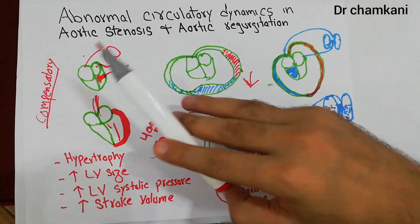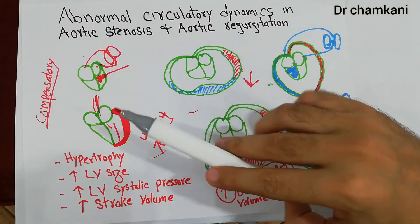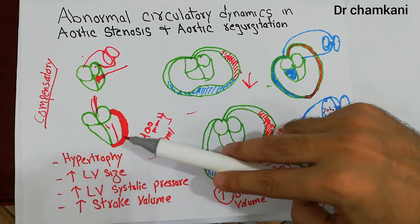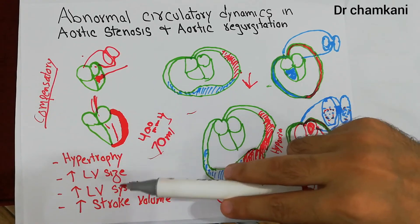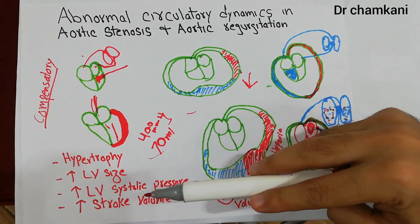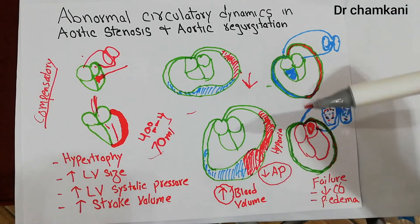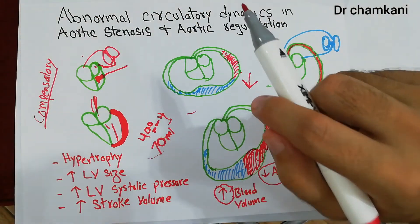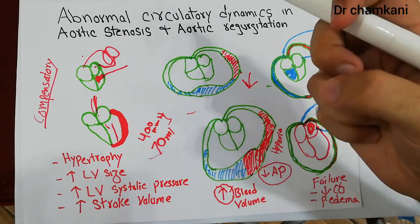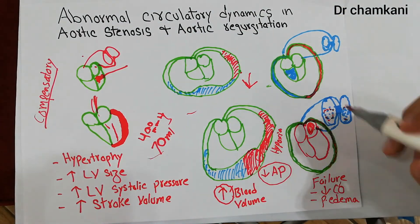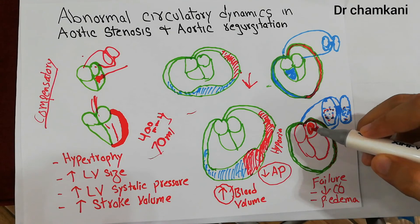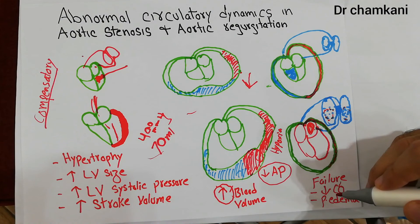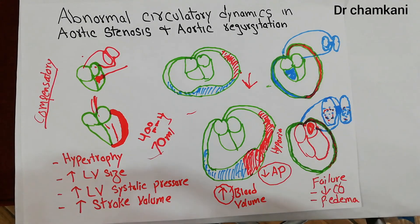In summary, the abnormal circulatory changes due to aortic stenosis and aortic regurgitation include: hypertrophy and increase in left ventricular muscle mass, increase in LV size, increase in LV systolic pressure, increase in left ventricular stroke volume, and finally increased blood volume. All these factors try to maintain circulation, but when they fail, decreased cardiac output occurs and pulmonary edema develops.